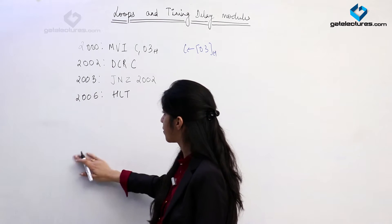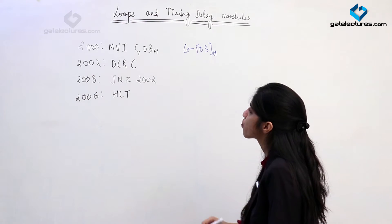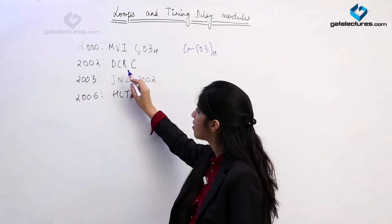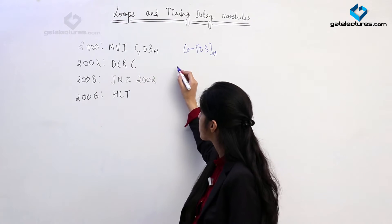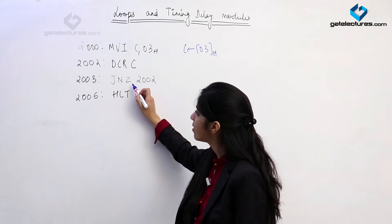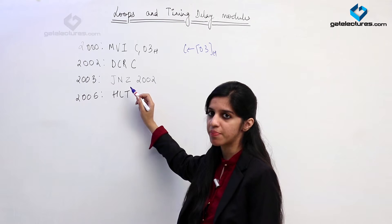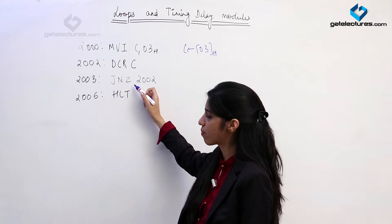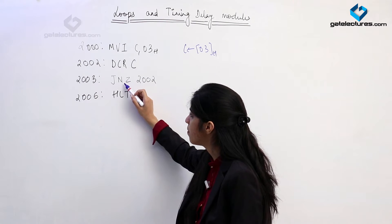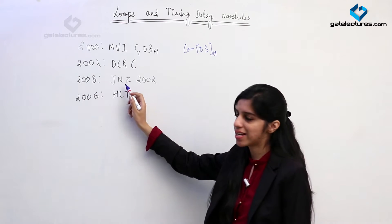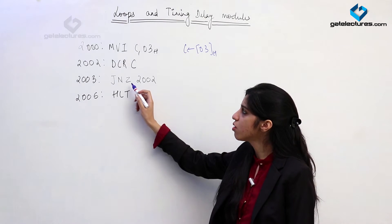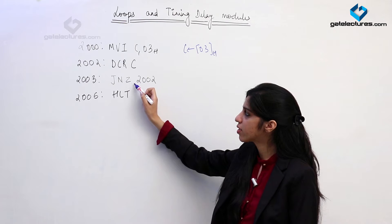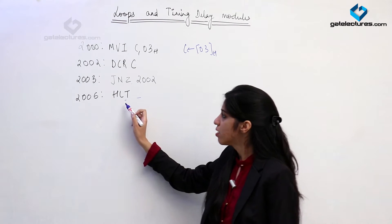At address 2006 I am giving halt. What happens in this program is we are loading C with 03, then we are decreasing C. Suppose in this cycle C becomes 02. Then we check the contents of C. If contents of C are 0, the program is not going to jump. JNZ means jump if not zero - if not zero, jump to 2002; if zero, the condition is false, there will be no jump and the program will end.